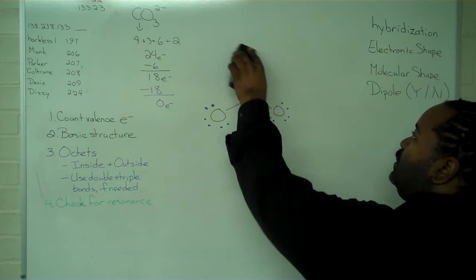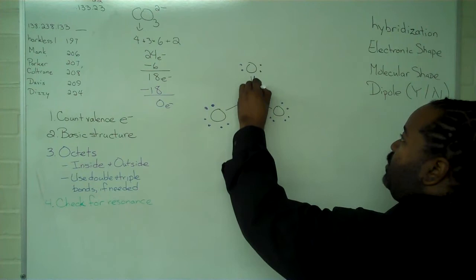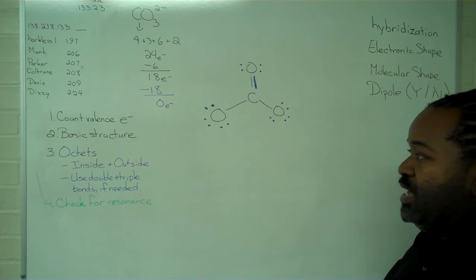However, I can use a double bond on this oxygen. So I erase that pair, and draw in my second bond here. And now carbon has an octet, and all of my oxygens have an octet.